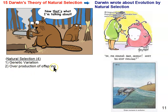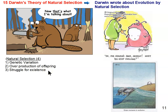Number two is overproduction of offspring — all species on Earth produce more offspring than can survive and reproduce. This leads to number three, the struggle for existence, which you can sum up as competition. Competition between individuals of the same species and between different species, because there are different species competing for the same resources. The struggle for existence is not just to survive, but also to reproduce — you have to survive long enough to reproduce. It's all about reproduction.